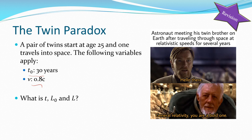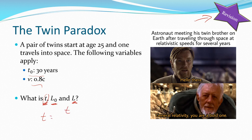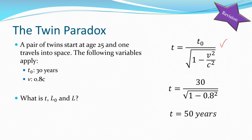Let's do some revision. We need to work out t, l naught, and l — the relativistic time, proper length, and relativistic length. Looking at the time dilation equation: we know that t naught, the proper time, is 30 years, and the velocity is 0.8c. When we plug those into our equation, the relativistic time t comes out as 50 years.